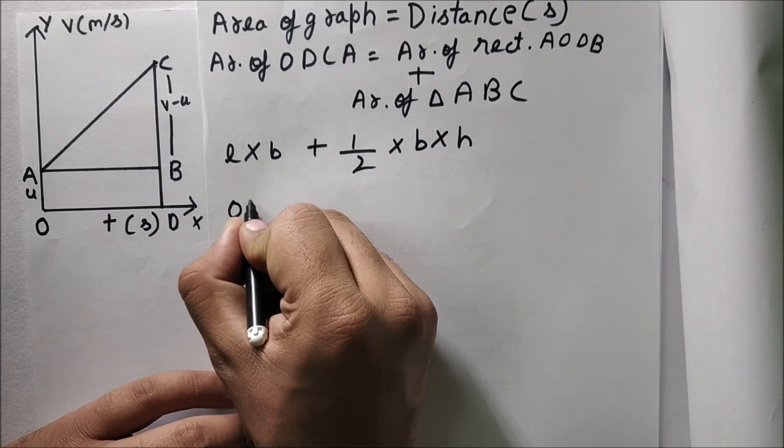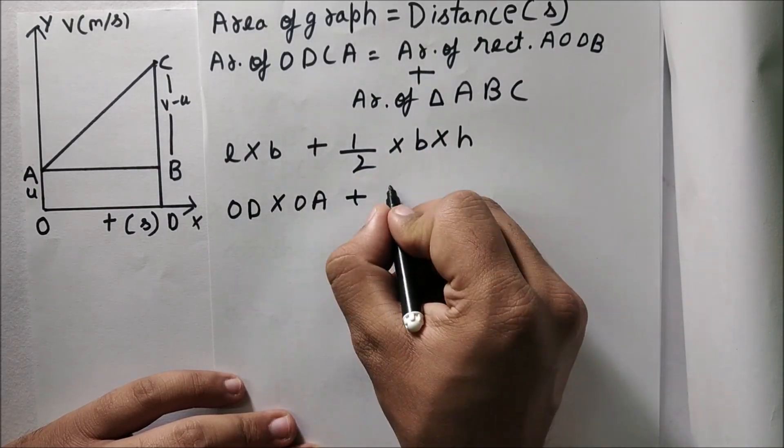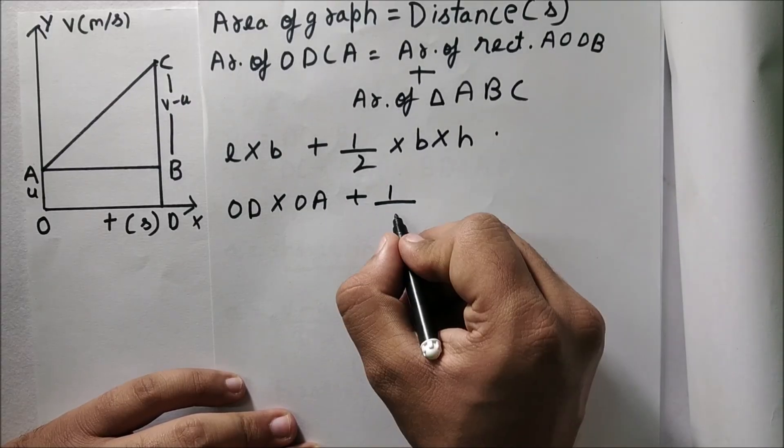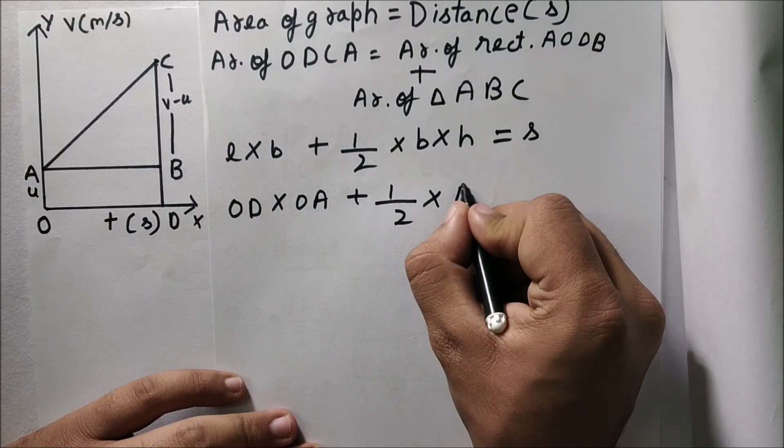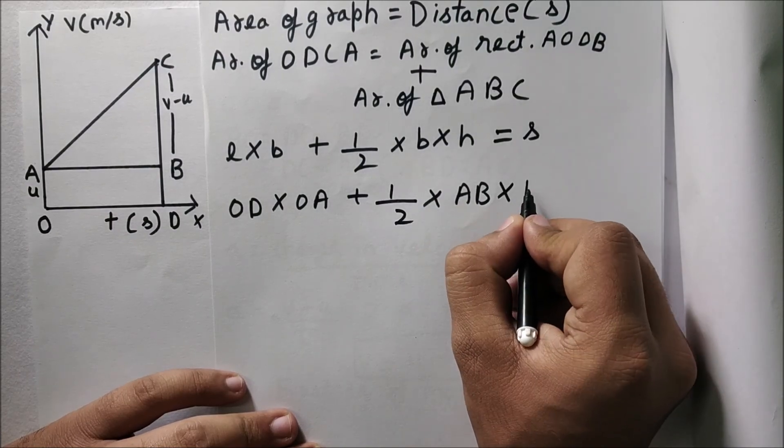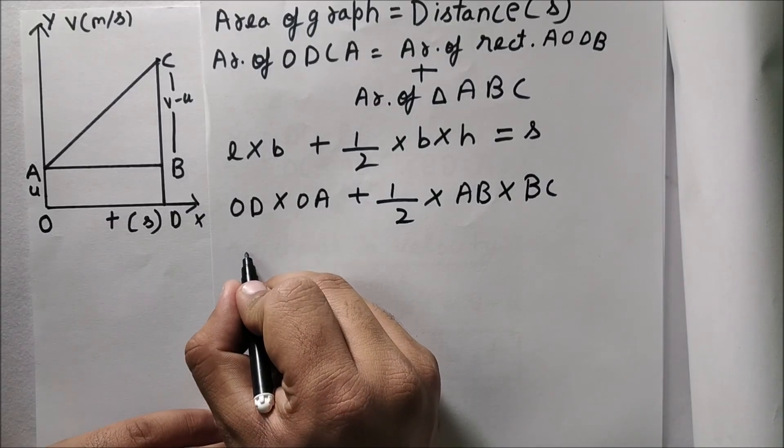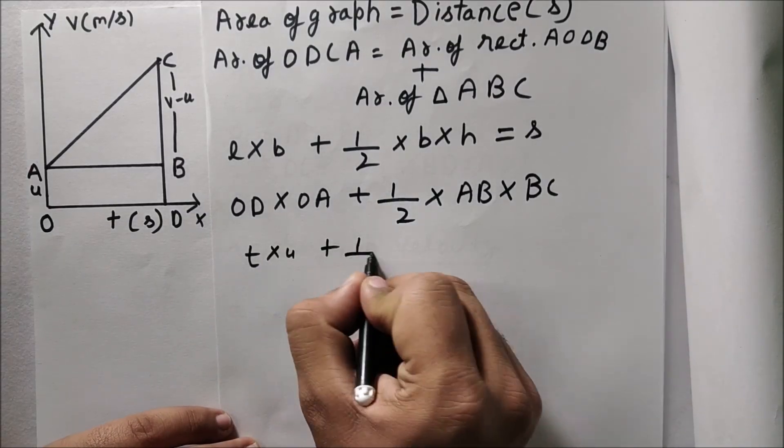So here length will be OD and breadth will be OA, and here half into base height, base is AB and height is BC. As you know that OD is time and OA is u, that's initial velocity.